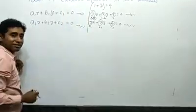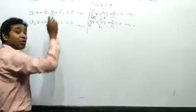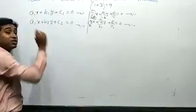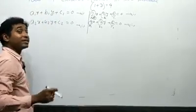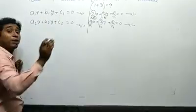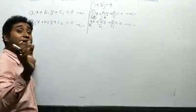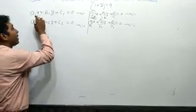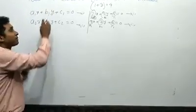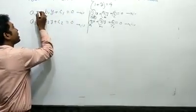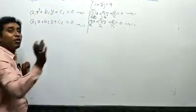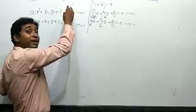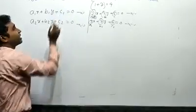The term 'linear' means the power of x and the power of y must both be one. If the power is one it is linear; if the power is two, that becomes quadratic, not linear.